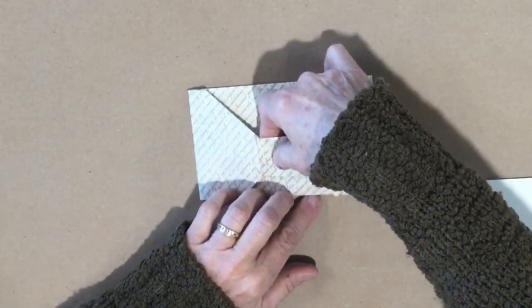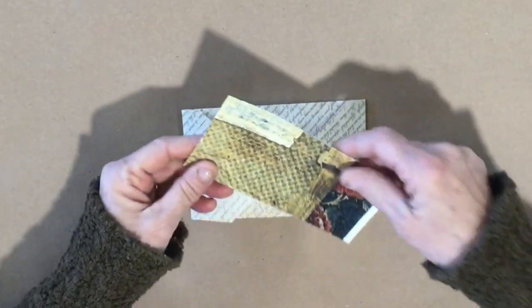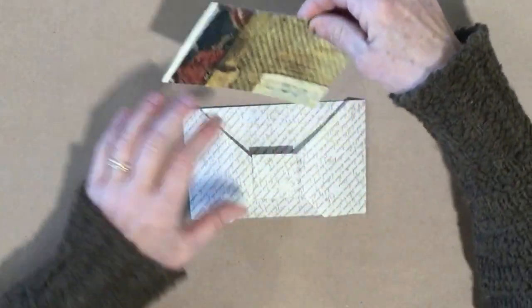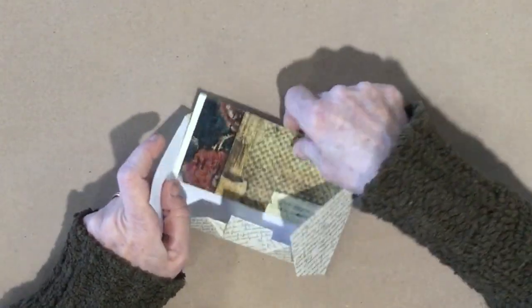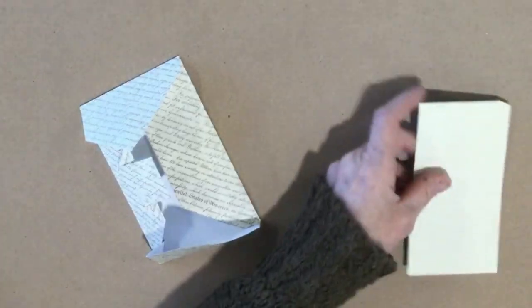So here is the top of my pocket. I haven't glued anything in yet. But I want to give it a little more interest. So I am going to take a sheet of paper. Before I glued all the other sides. I am going to glue this in.